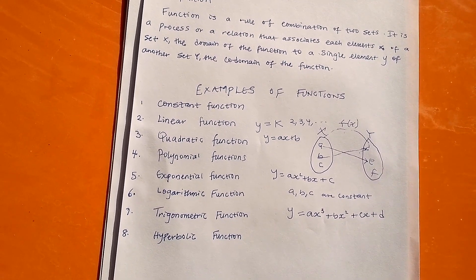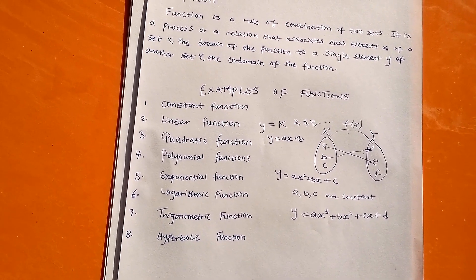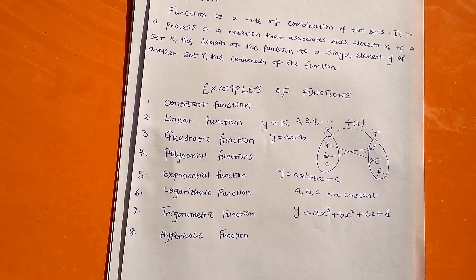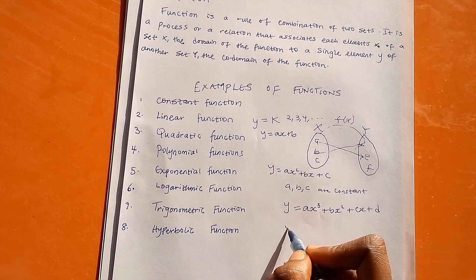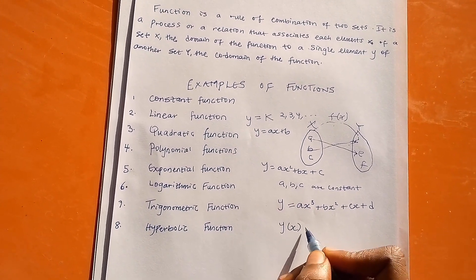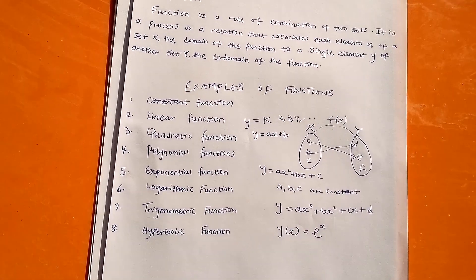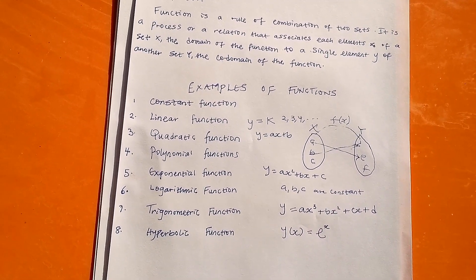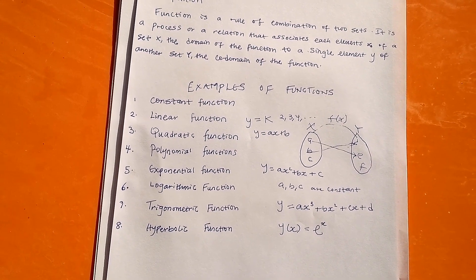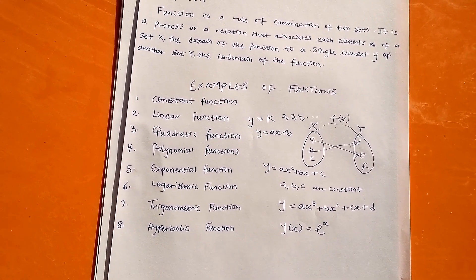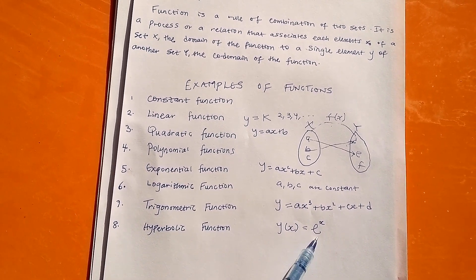Number five is the exponential function. The exponential function always has an exponent value — the exponent is a key component, as the name suggests. Whenever you see a function that has exponents in that form, it is called the exponential function.